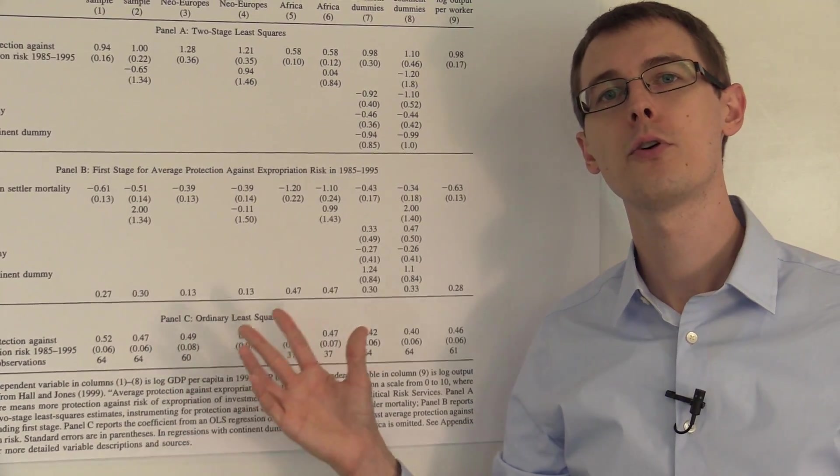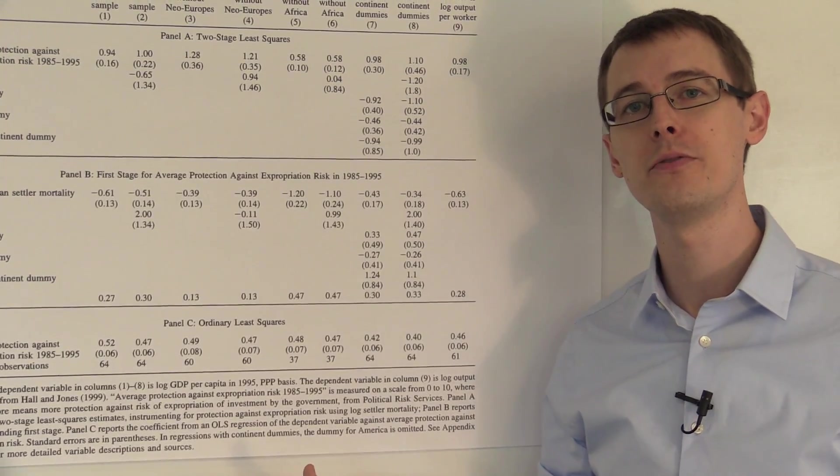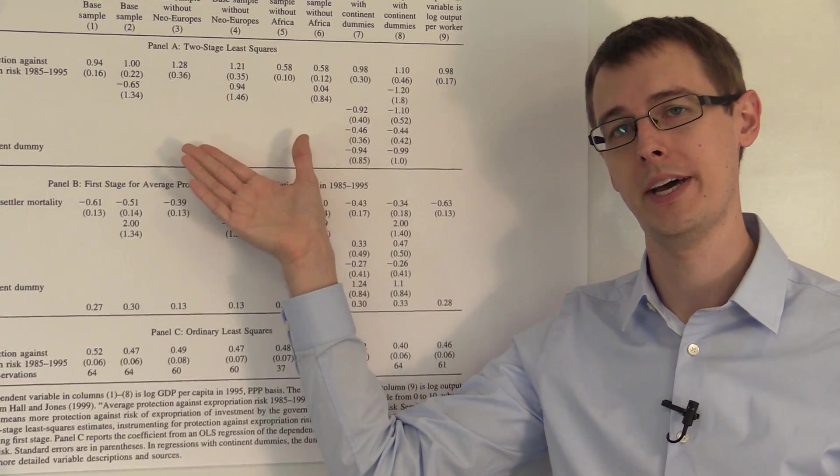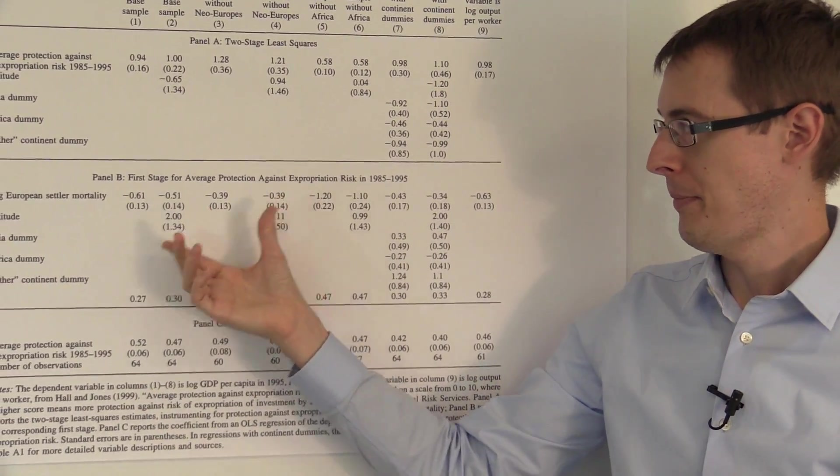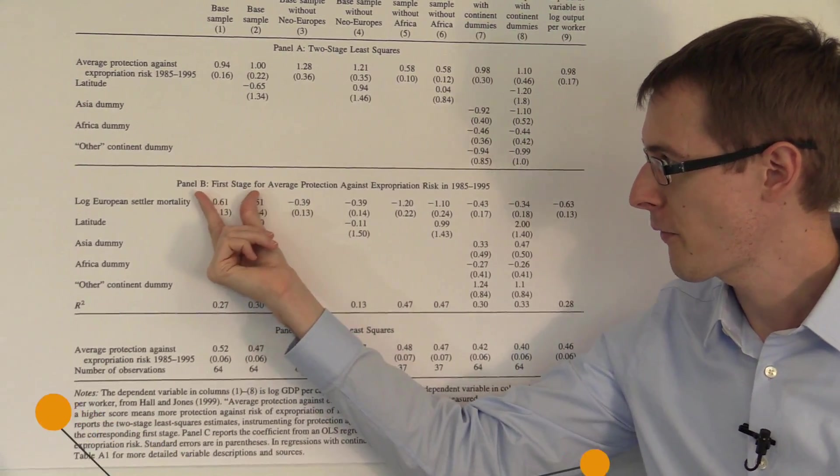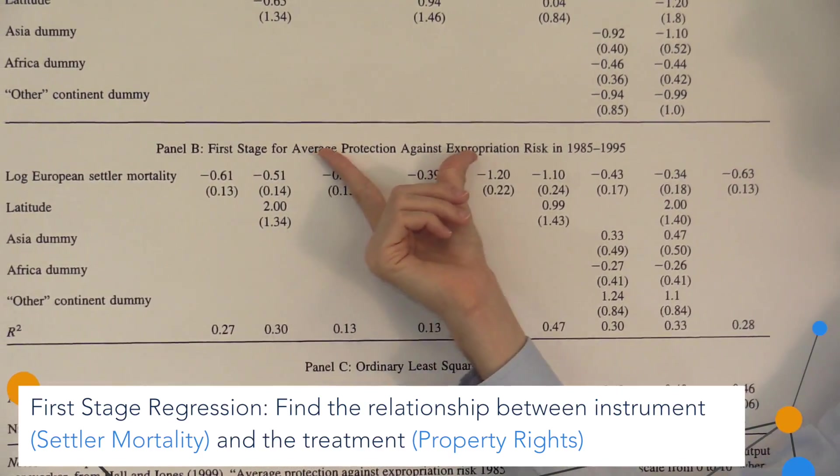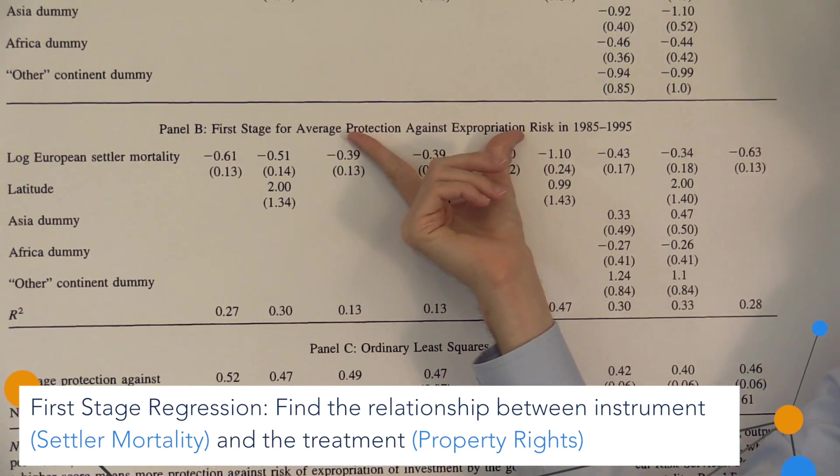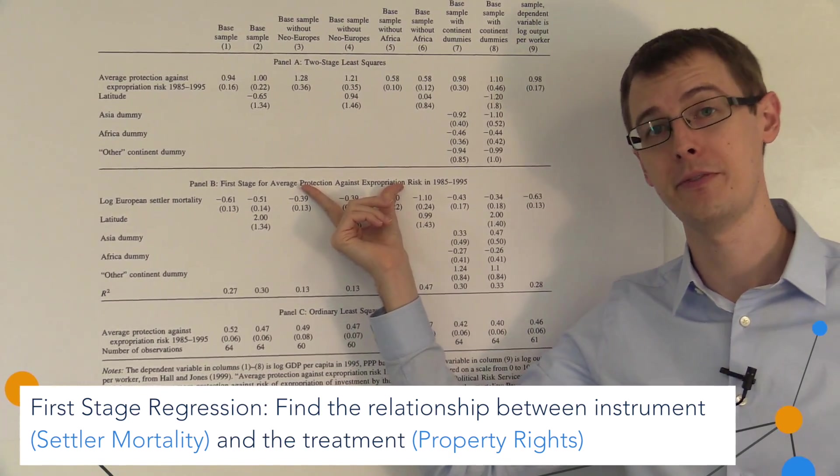It's not telling us the causal effect. So they've included it here for comparisons to the actual causal effects that they show in panel A. In panel B, they show the first stage for average protection against expropriation risk. That's our measure of property rights, that's our treatment variable.